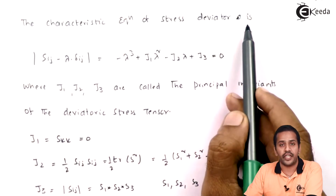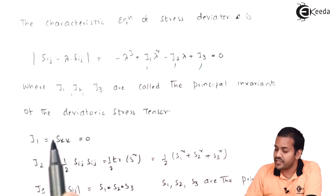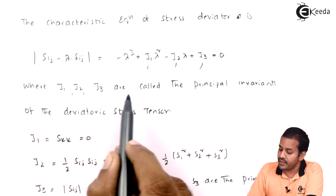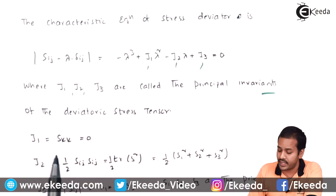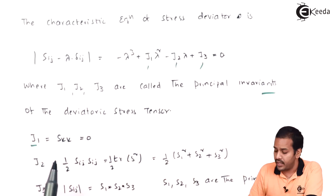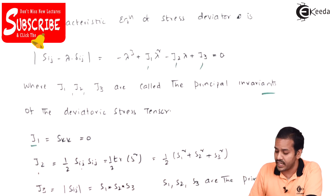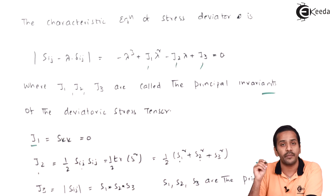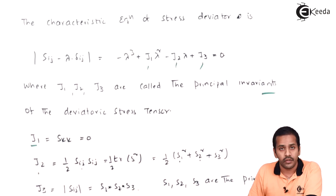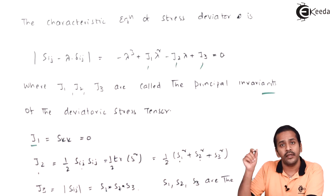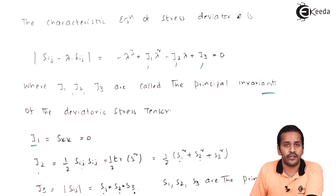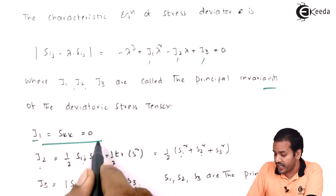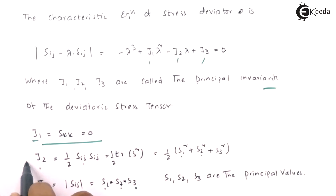The characteristic equation for the stress deviator involves invariants J1, J2, J3, similar to I1, I2, I3 for the Cauchy stress tensor. J1 is the trace of S, J2 is one-half of s_ij times s_ij, and J3 is the determinant of s_ij. If s1, s2, s3 are the principal values, the determinant equals their product. Importantly, the trace of the deviatoric stress tensor is zero, so the only remaining significant invariants are J2 and J3.